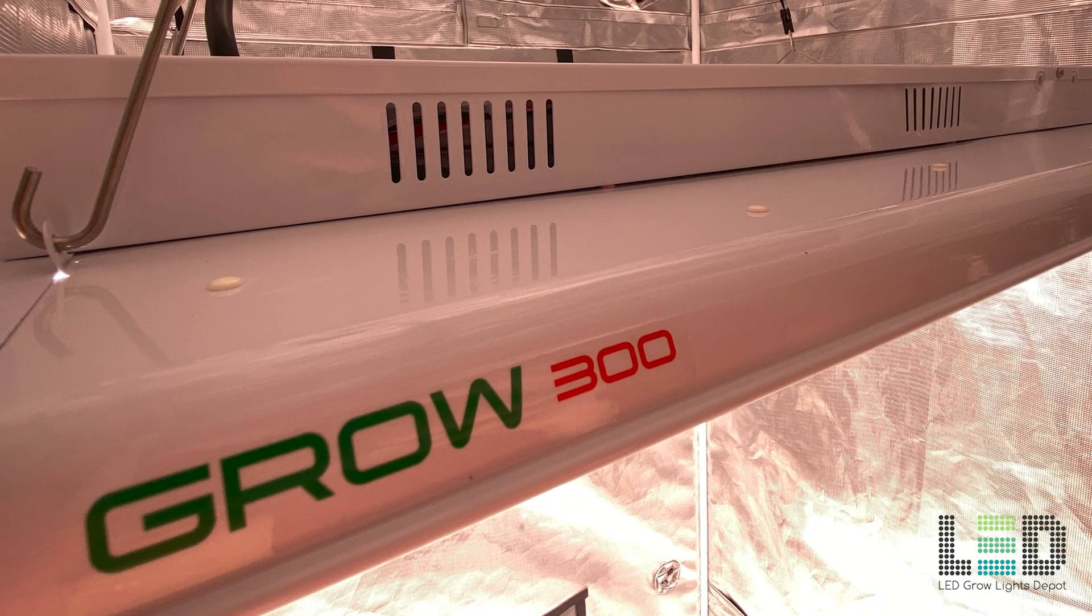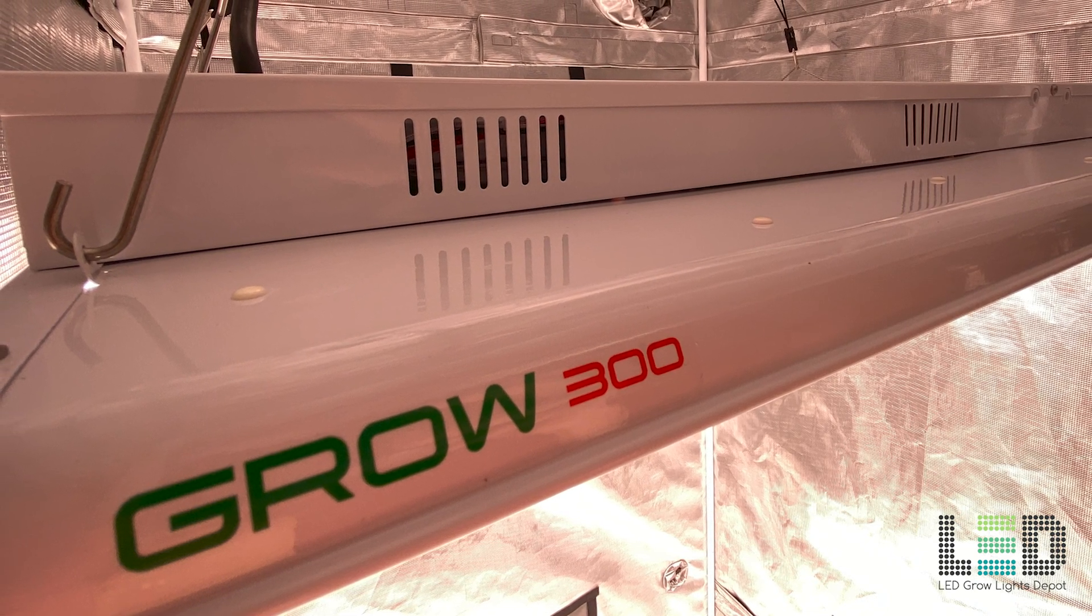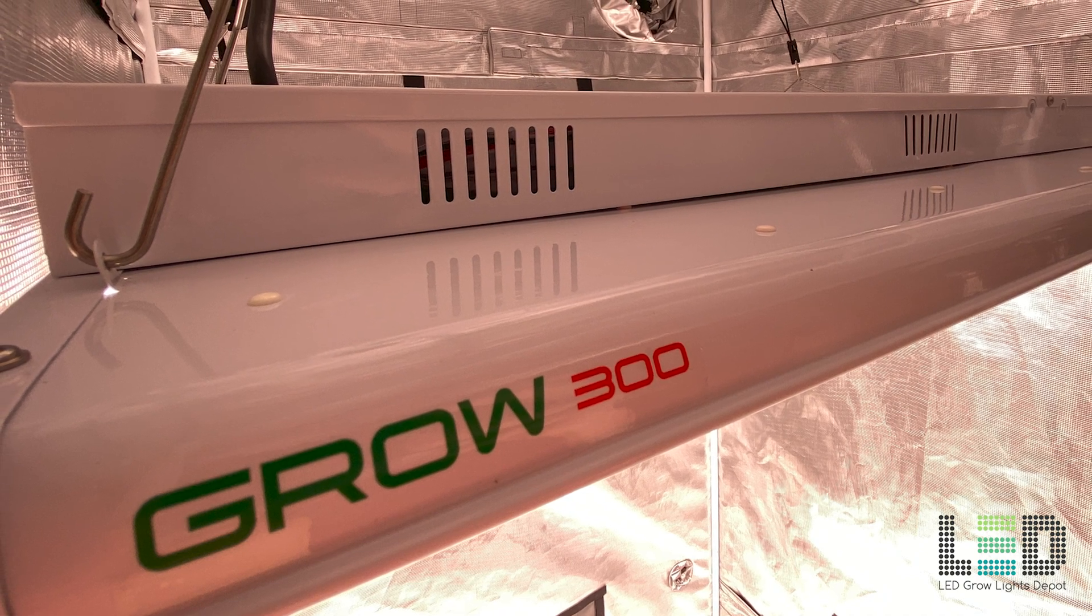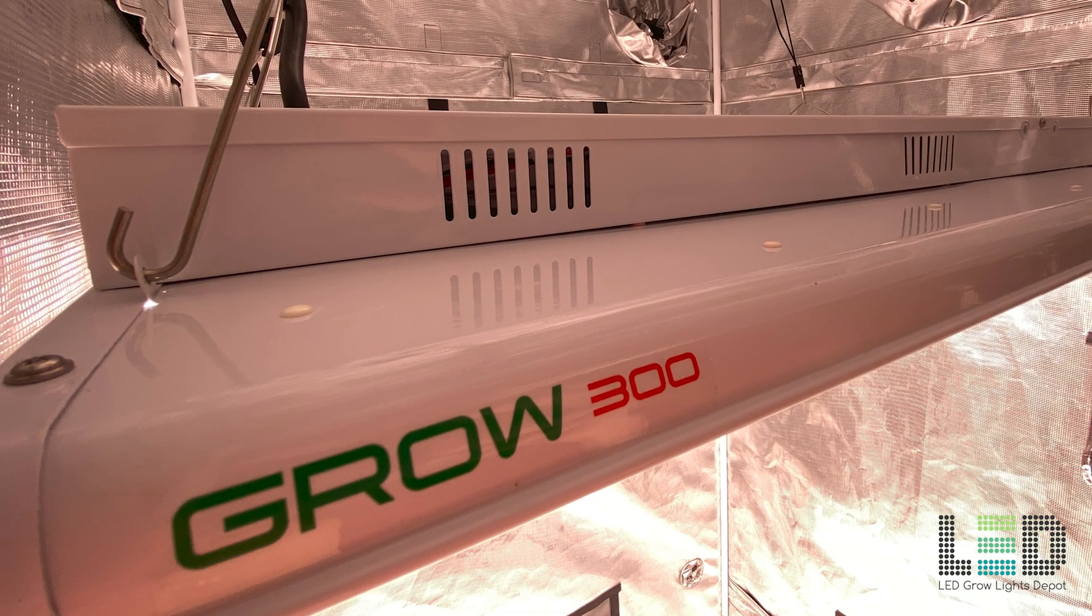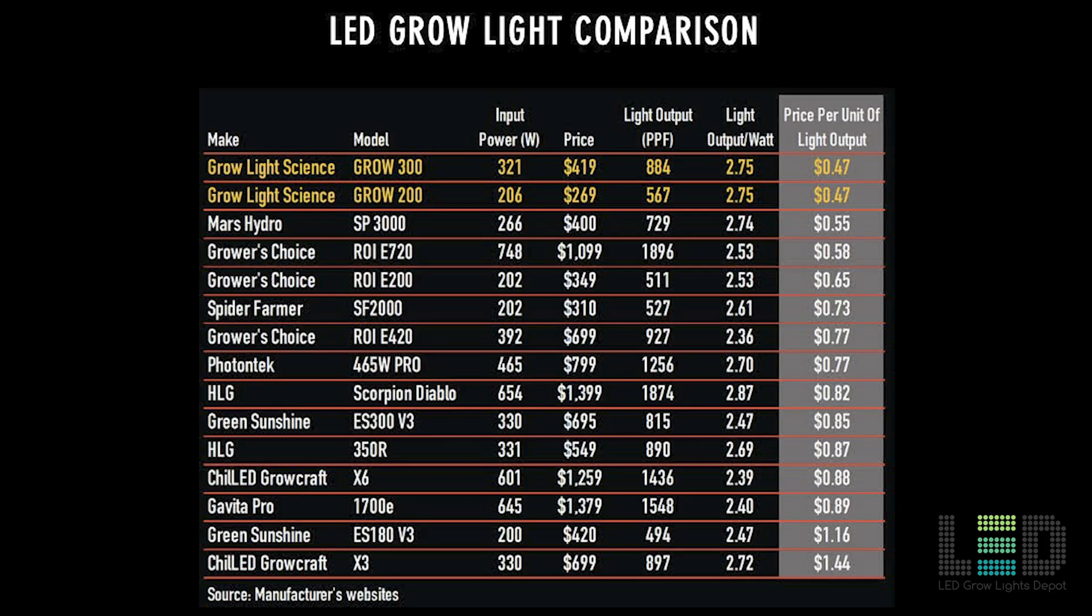At this low price point, you're still getting top-end Samsung and Osram diodes and reliable drivers in the Grow 300, so you're not sacrificing quality when you use these lights. You're just paying a lot less. Check out this chart that compares Grow Light Science fixtures price per unit of light output to other popular LED grow lights on the market. You can see that these fixtures really do have one of the lowest costs, even less than Mars Hydro and Spider Farmer, which I consider popular budget LEDs. Basically, you're not overpaying for light and you're getting a good quality product.